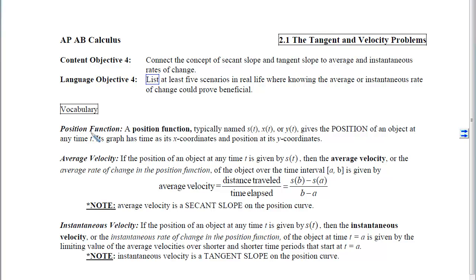First is position function. A position function is like any other function. It will have an input value and an output value, which will generate points on the graph. The position function, in our case, will typically be named S(t), where time is the input, or X(t), or Y(t). The outputs of these functions will yield the position of an object at any time t. So graphically, the inputs, or the X coordinates, will be the time, and the outputs, or the Y coordinates, will represent the position, or where the object is, at a given time.